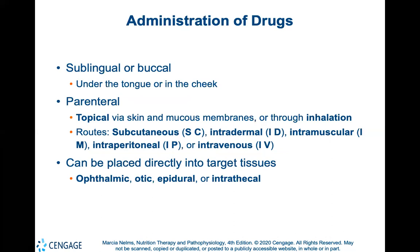Drugs can be administered in many ways. The administrative route depends on the chemical properties of the drug, the type of effect desired, and patient characteristics that affect how the medication can be administered. The oral route requires that the patient be able to swallow medication and that the slower rate of absorption is acceptable. Sublingual administration means the drug is placed under the tongue or in the cheek. Routes of administration can be peritoneal, topical via the skin, mucous membranes, or through inhalation. Parenteral administration requires injection into the body through routes that are either subcutaneous, intradermal, intramuscular, intraperitoneal, or intravenous.